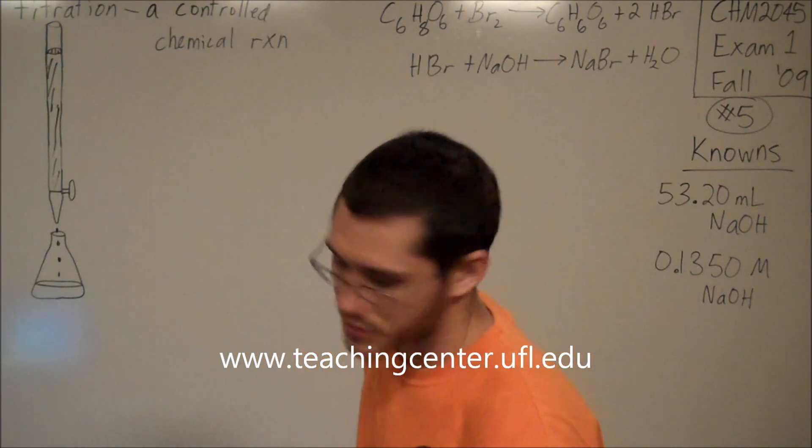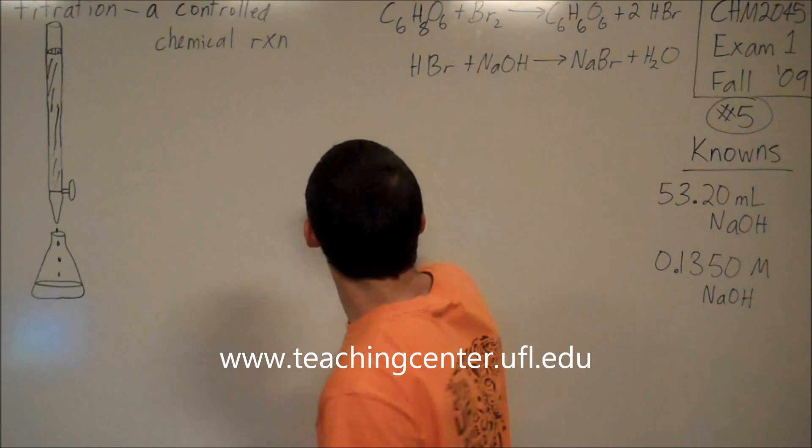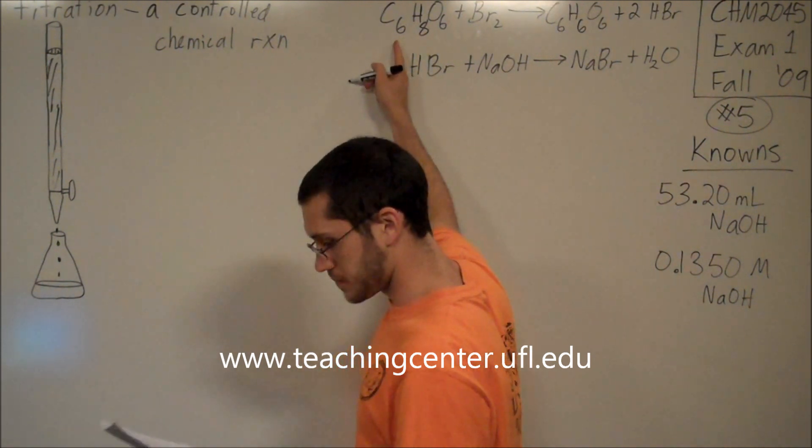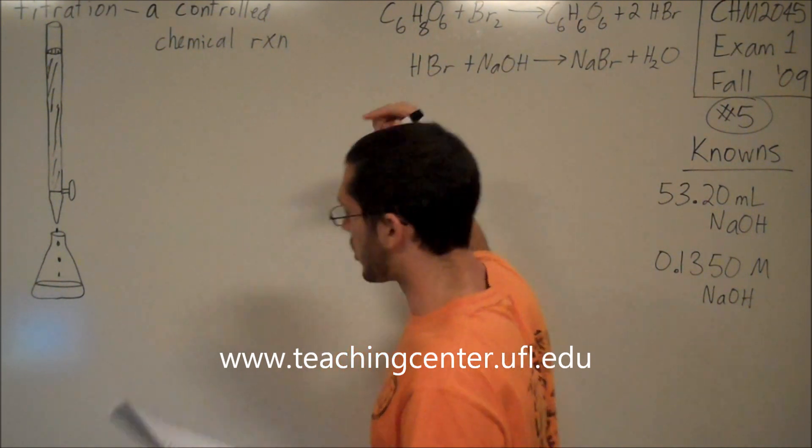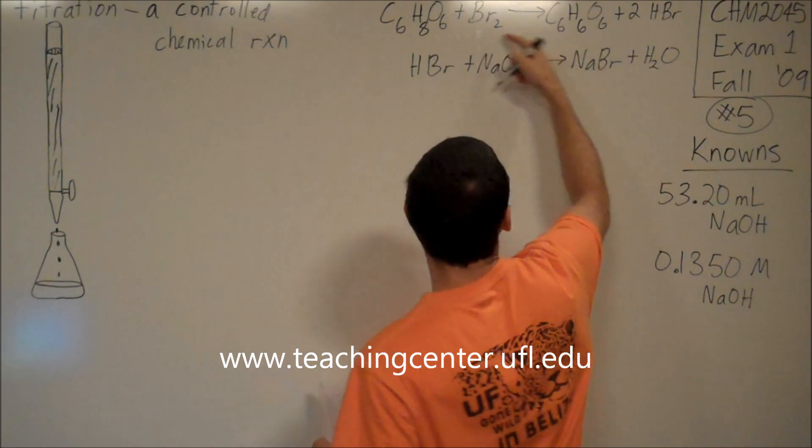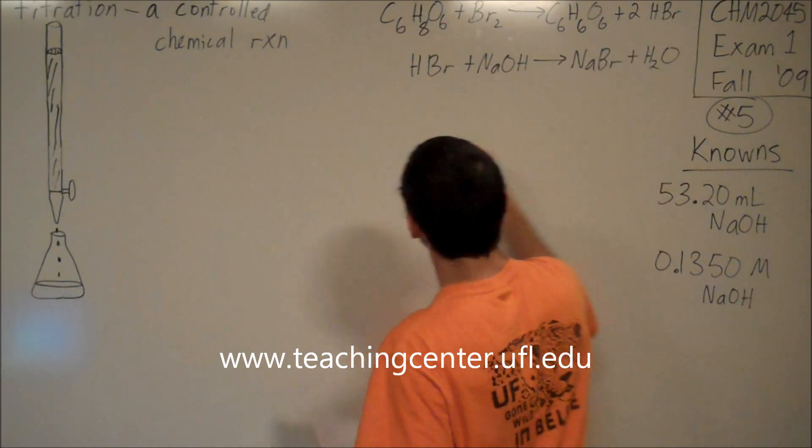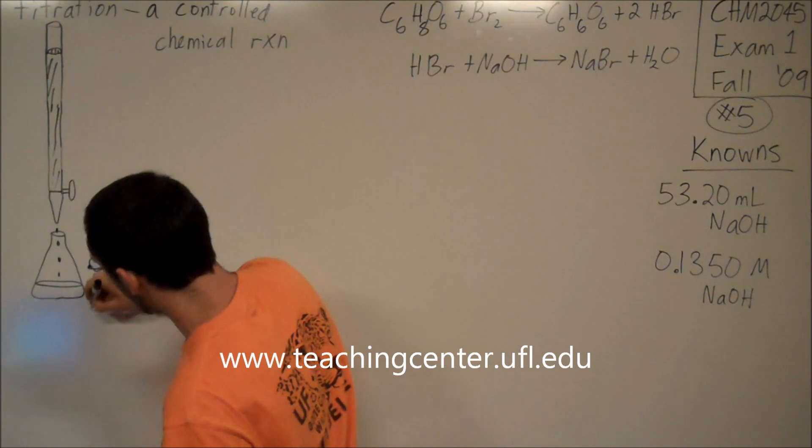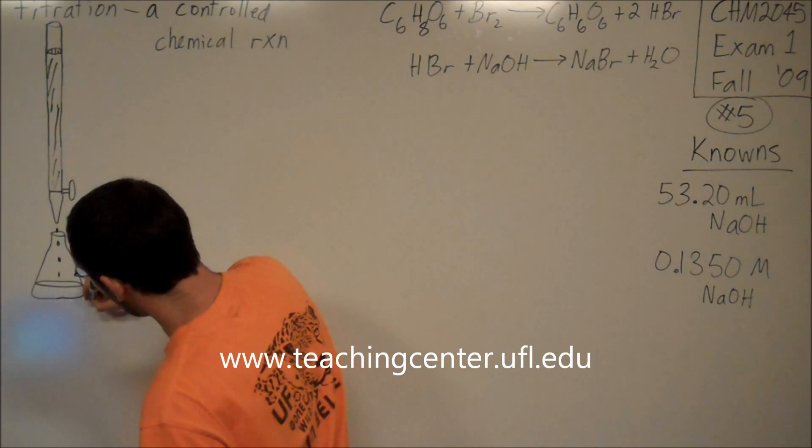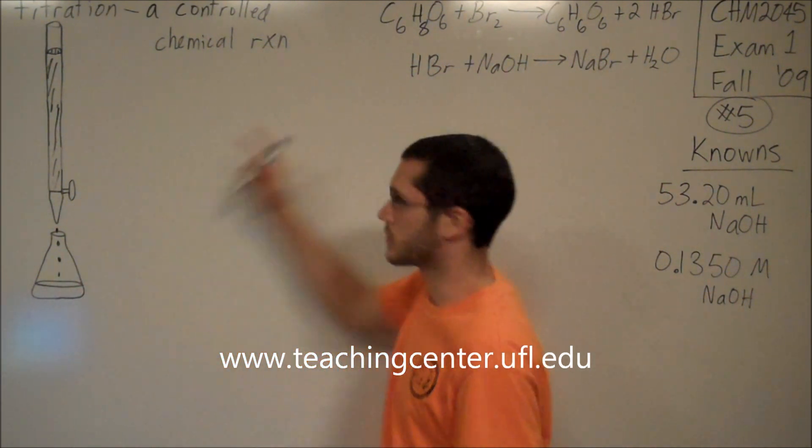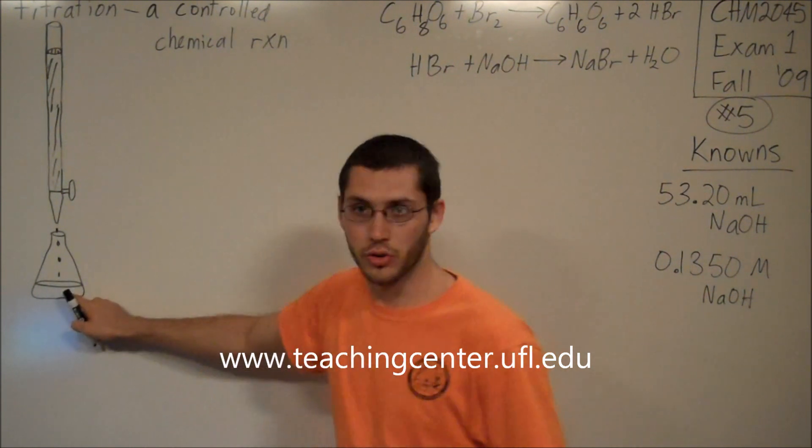So, it tells us that first we took some C6H8O6, dissolved it in water, and reacted it with bromine according to the first equation. In a titration, that would be the thing that gets titrated, which is the vitamin C, is what you put in your Erlenmeyer flask.